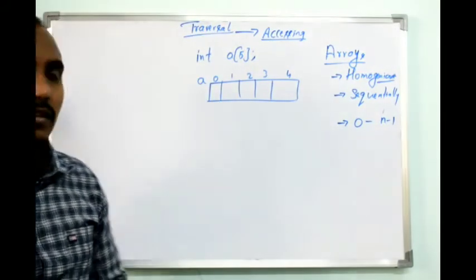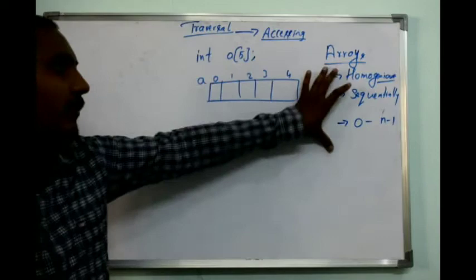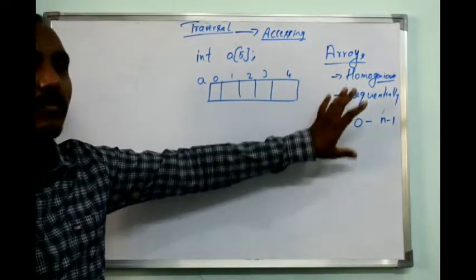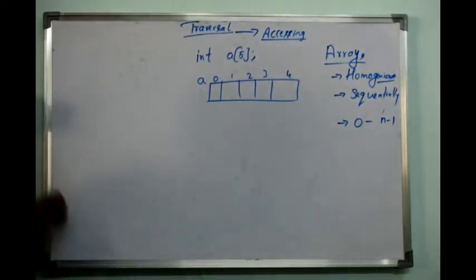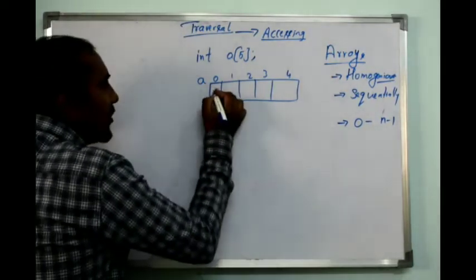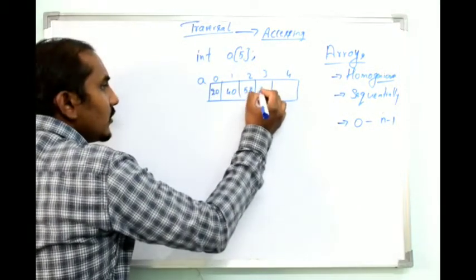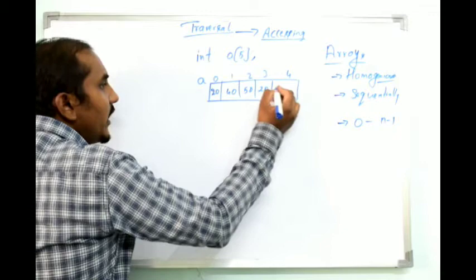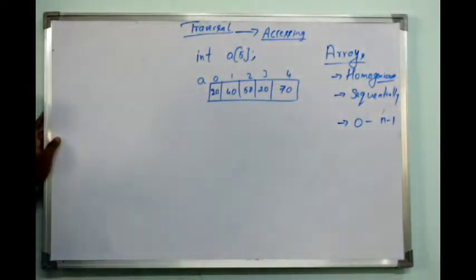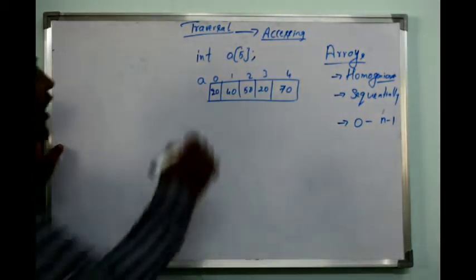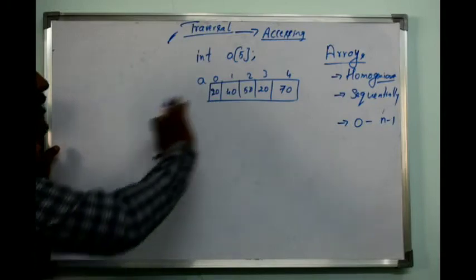We are taking the example of an array. I have discussed what an array is, the brief description, and how an array looks. Suppose I have inserted some elements into the array: 20, 40, 50, 20, and 70. I have inserted these elements and now I need to do traversal — accessing the elements stored in the array.